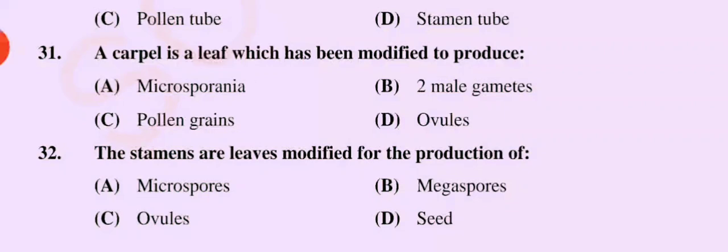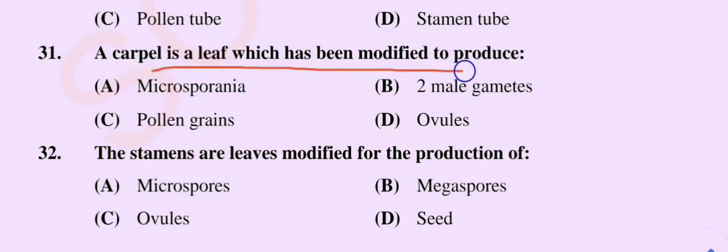Bismillah ar-Rahman ar-Rahim, Assalamu alaikum dear students. Today we will discuss from question number 31. A carpel is a leaf which has been modified to produce: option A microsporangia, option B two male gametes, option C pollen grains, option D ovules. The correct option is option D: ovules.